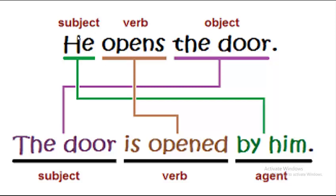Each sentence starts with the subject, followed by the verb, and then the object. When we form the passive voice, we start with the object at the beginning of the sentence, followed by the verb 'to be' in the present — 'is' or 'are' — and then we put the verb in the past participle form. Finally, we can put the subject at the end preceded by the word 'by.'